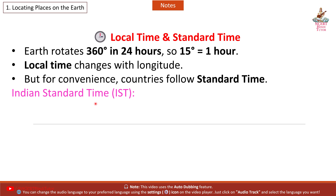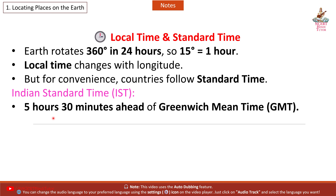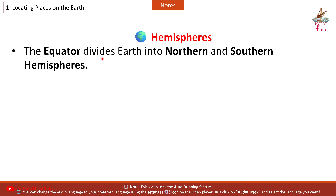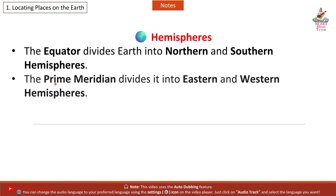Indian Standard Time (IST) is 5 hours 30 minutes ahead of Greenwich Mean Time (GMT). The equator divides the Earth into Northern and Southern Hemispheres. The Prime Meridian divides it into Eastern and Western Hemispheres.